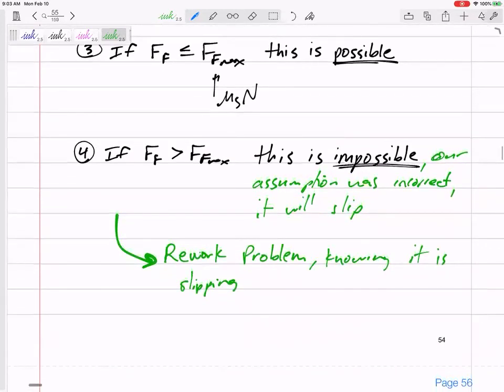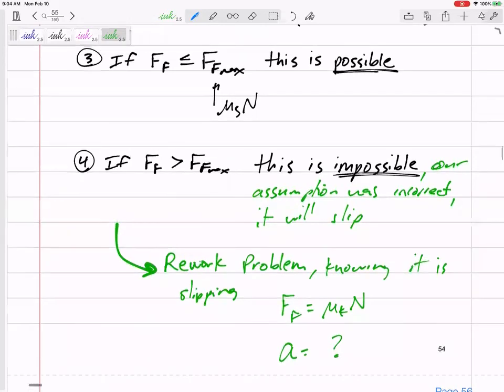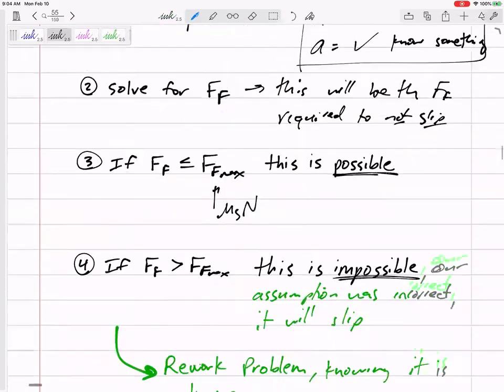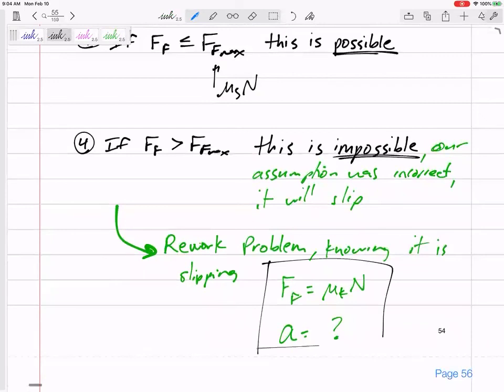When you know it is slipping, the force of friction is μ_k times N, but now the acceleration might be harder to find. Do you see? If you assume it's not slipping, you don't know the force of friction, but you do know the acceleration. But when you know it is slipping, you do know the force of friction, but you don't know the acceleration. You're trading one unknown for another.